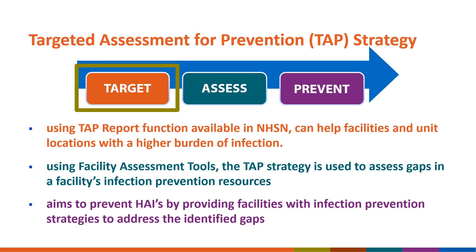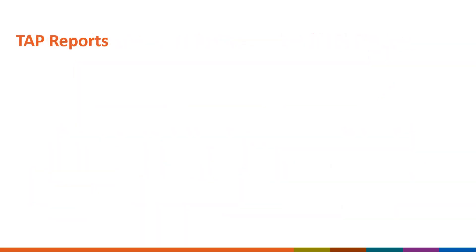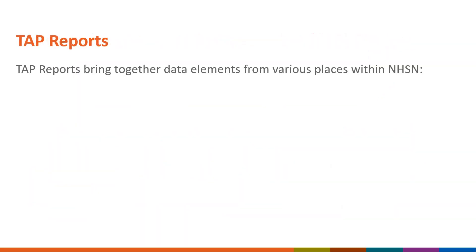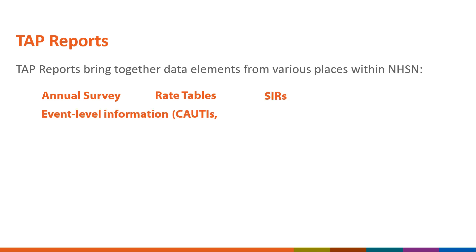TAP Reports have the ability to give facilities more insight into their data and help them develop a strategy for HAI prevention. TAP Reports bring together data elements from various places within NHSN, such as the annual survey, rate tables, SIRs, and event-level information for catheter-associated urinary tract infections or CAUTIs, central line-associated bloodstream infections or CLABSIs, C. difficile infections or CDIs, and MRSA LabID.